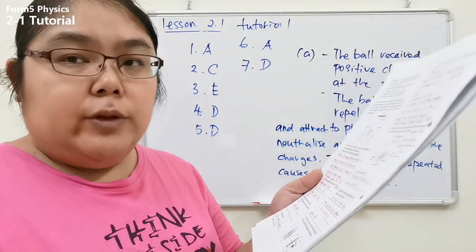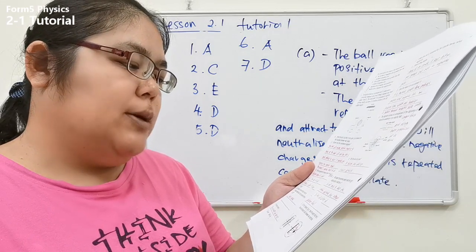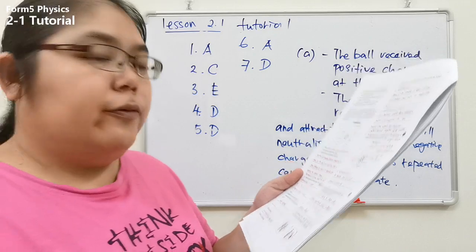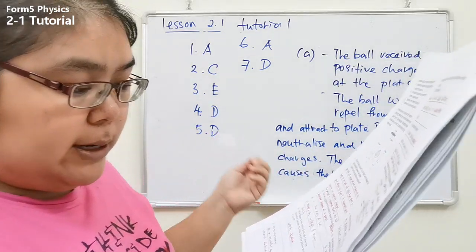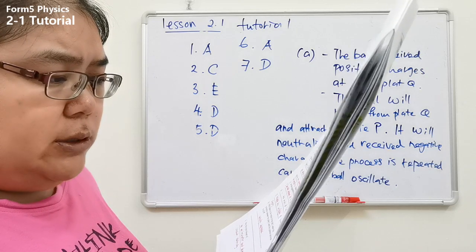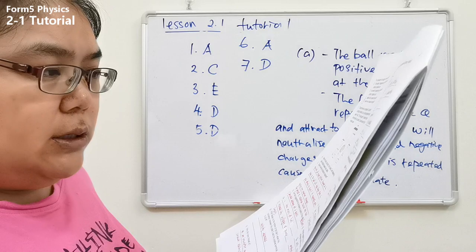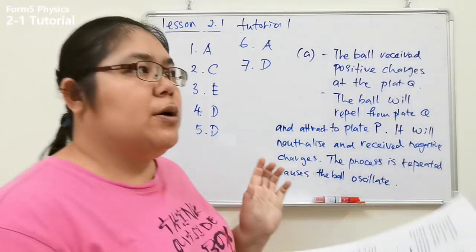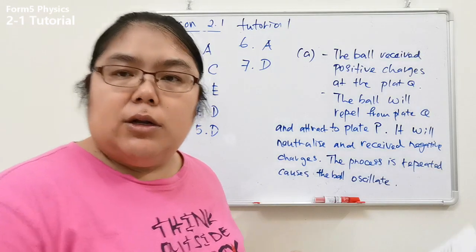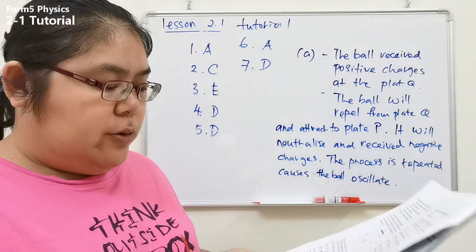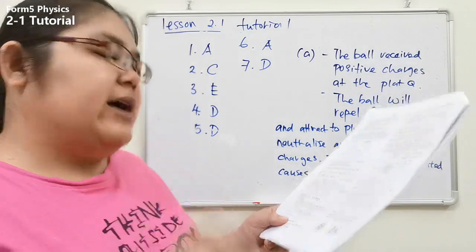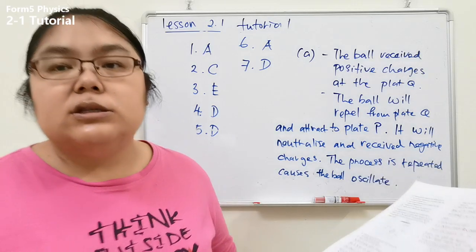Number three: what happens to the motion of ball X when the connection between plate Q and the positive terminal is cut off? When we cut off the positive connection, the ball cannot immediately stop — it still oscillates. The answer is: velocity decreases. You cannot say it stops; the ball still has velocity, it just decreases.